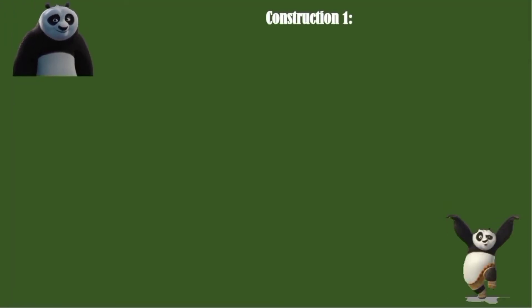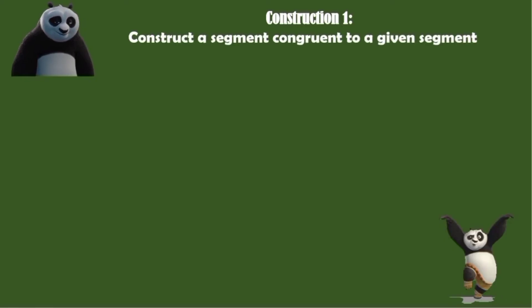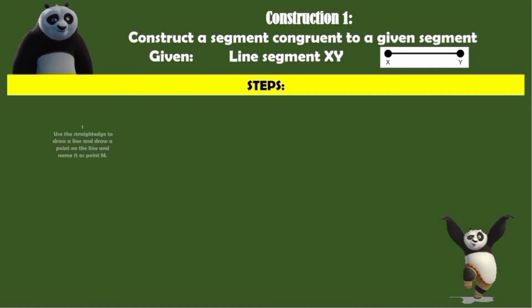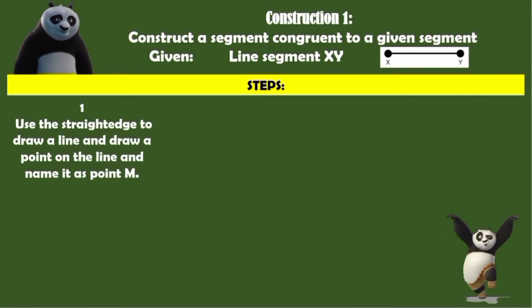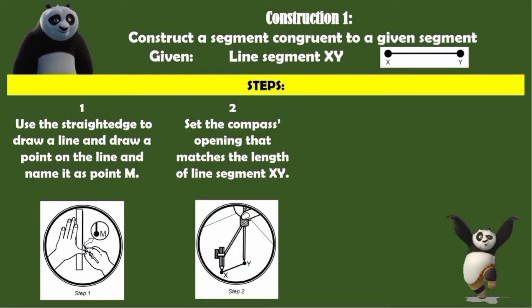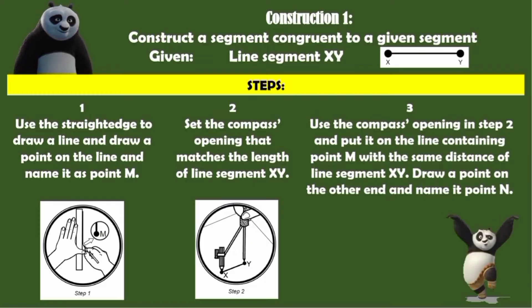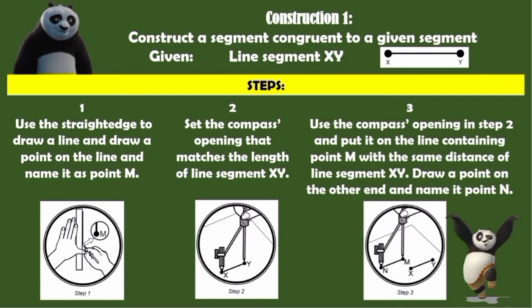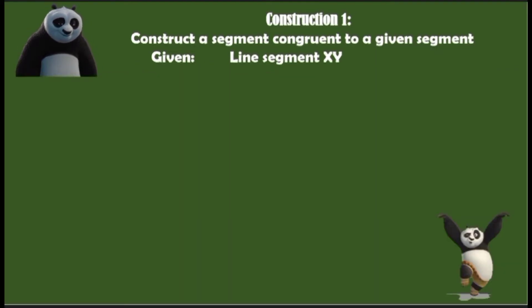Construction Number 1: Construct a segment congruent to a given segment. Our given is line segment XY. Now let's follow the following steps. First, use the straightedge to draw a line and draw a point on the line and name it as point M. Number 2: Set the compass opening that matches the length of line segment XY. Number 3: Use the compass opening from step 2 and put it on the line containing point M with the same distance of line segment XY. Draw a point on the other end and name it point N.